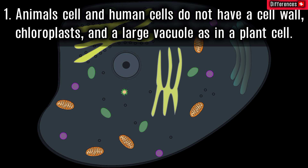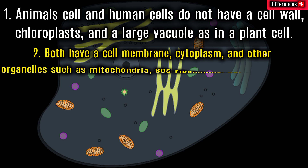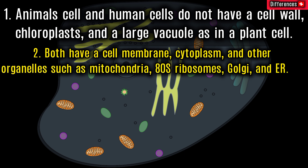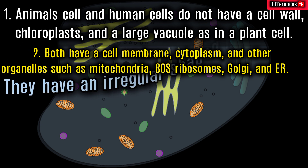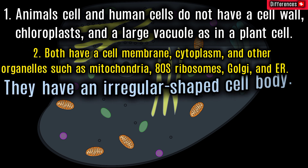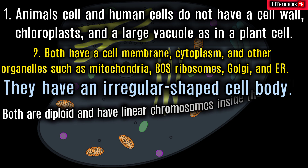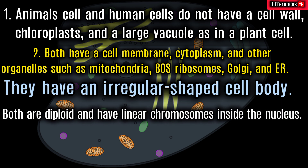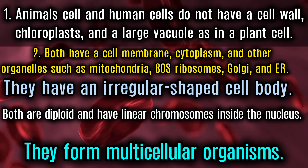Similarities between animal cells and human cells: both do not have a cell wall, chloroplasts, or a large vacuole as found in plant cells. Both have a cell membrane, cytoplasm, and organelles such as mitochondria, ribosomes, Golgi apparatus, and endoplasmic reticulum. They both have an irregular-shaped cell body, are diploid with linear chromosomes inside the nucleus, and form multicellular organisms.